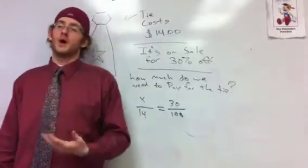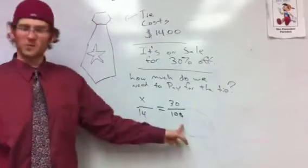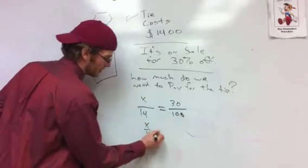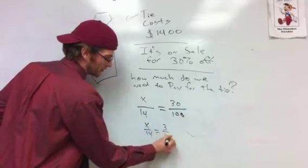Next step, Gusterson, is what should we do? Always, what do we have to do with this fraction? Take away the zeros. We have to reduce that fraction, so we have X over 14 equals 3 over 10.